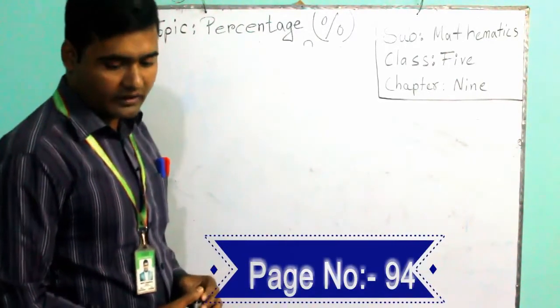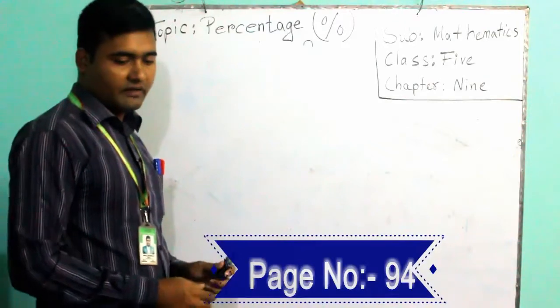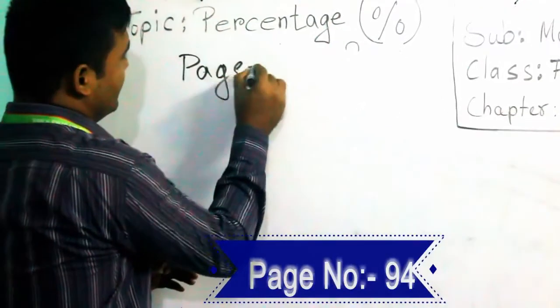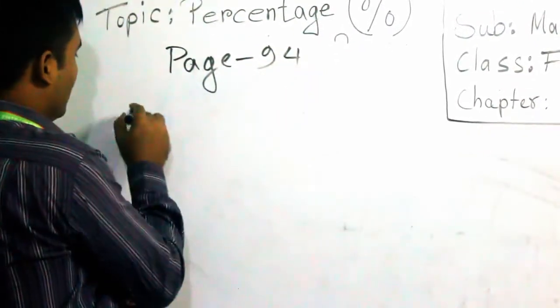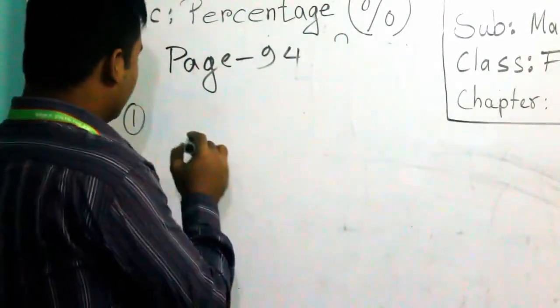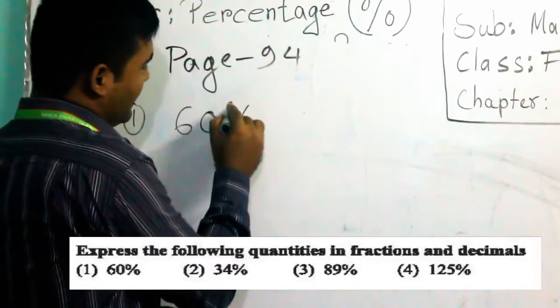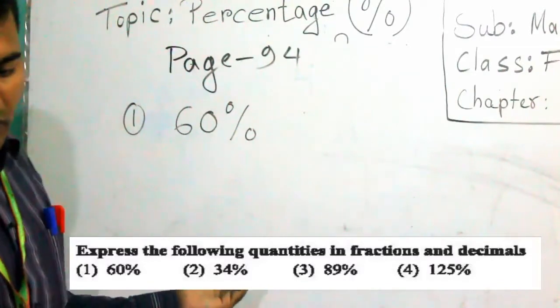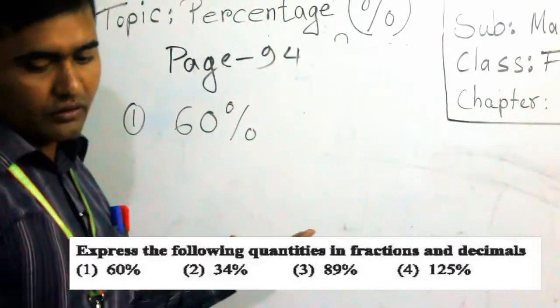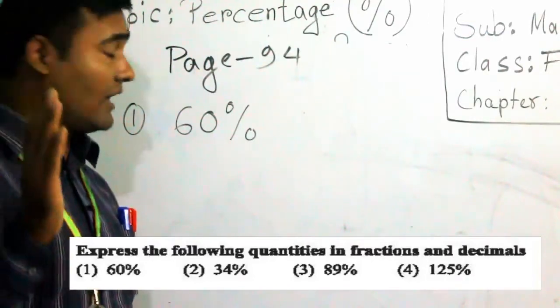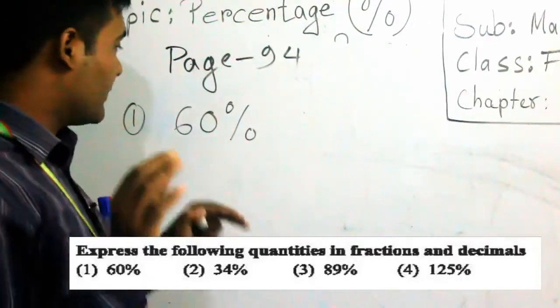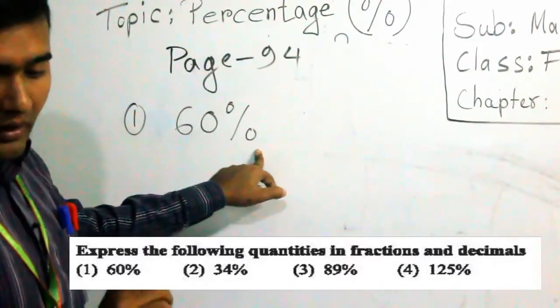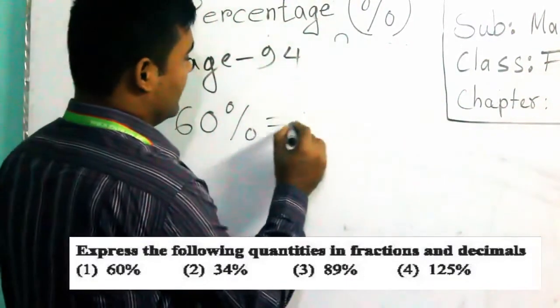Here you can find express the following quantities in fractions and decimals. Let us try number 1. Page 94, number 1. There is one problem like this, there is written 60 percent. If you see 60 percent, what should we do? We will convert this one into decimal.